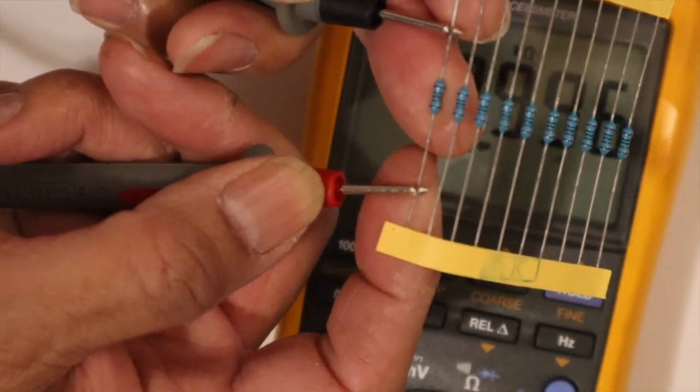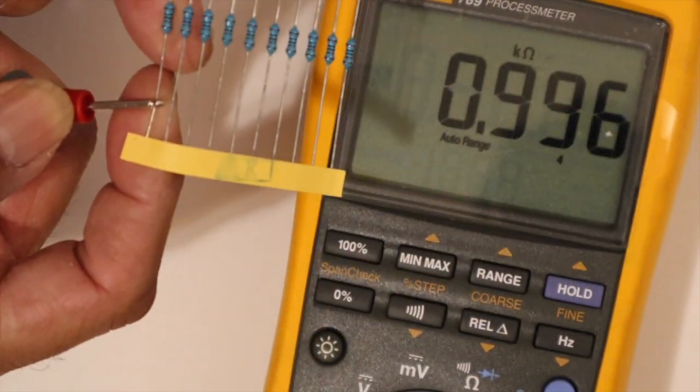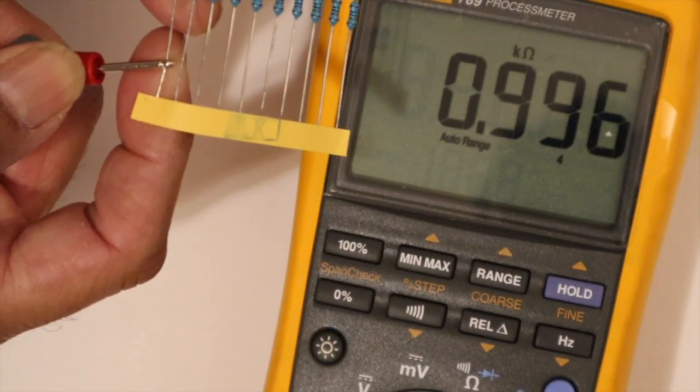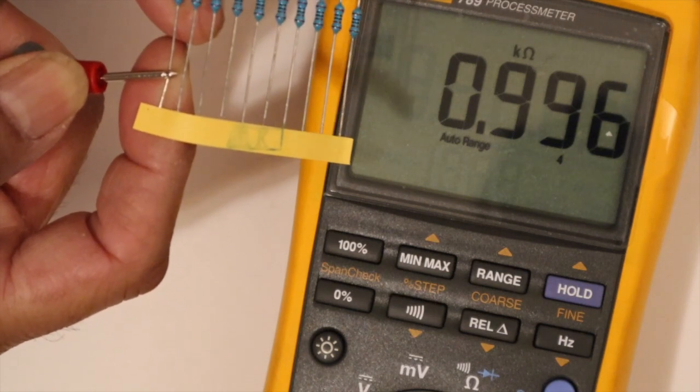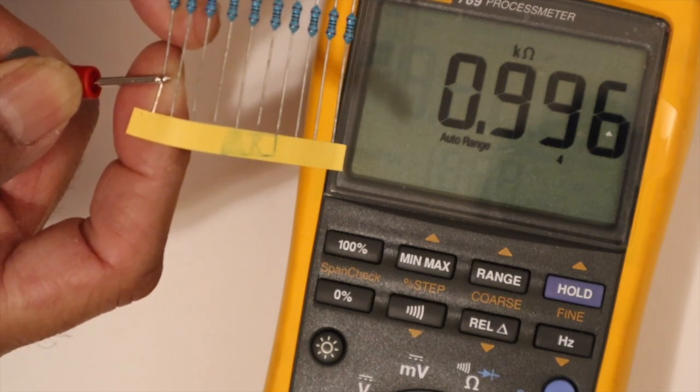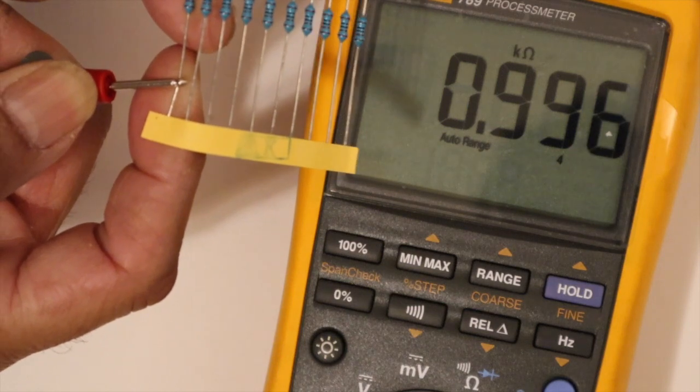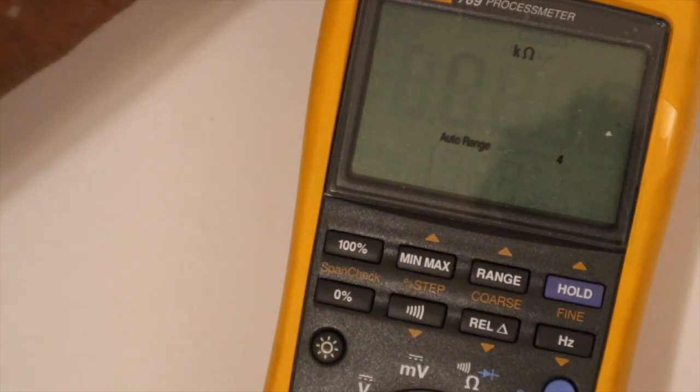You see the number change? I'll move it out of the way. Now you see the K. So that is about 1K ohm. 1 kiloohm. That's one of the ones you need. You'll never get exactly 1K. That's 1 kiloohm. So we have that one.